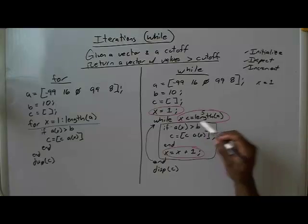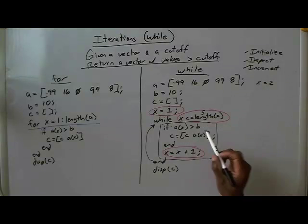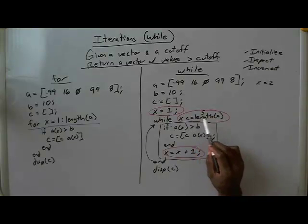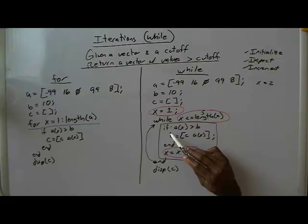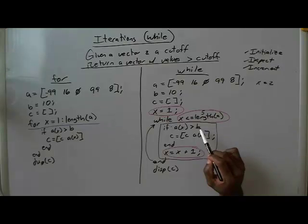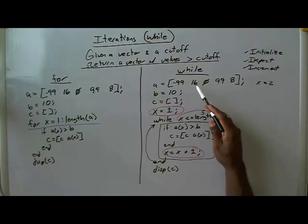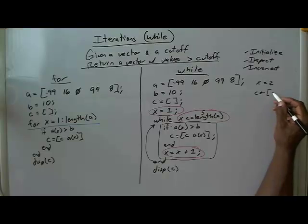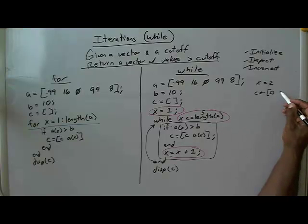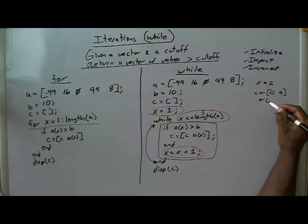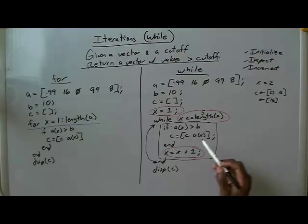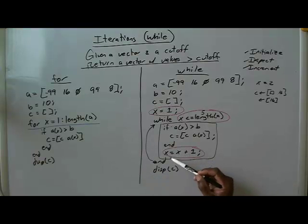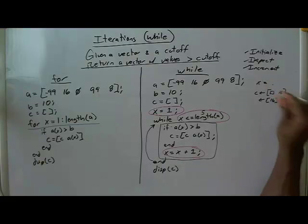We check: is A indexed at 2 greater than B? B is 10, and A at index 2 is 16 — yes, 16 is greater than 10. So C gets the old C, which is the empty vector, concatenated with A indexed at x, which is 16. Now C is the vector containing 16, just as we did with the for loop. We come down and increment again, so now x is 3.